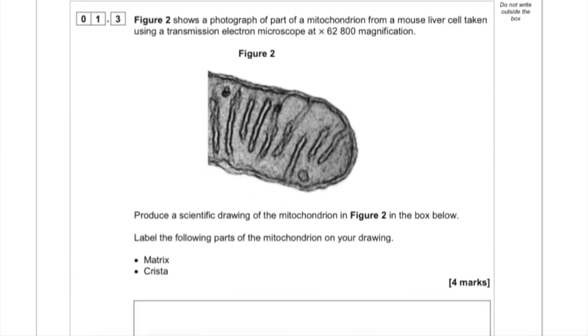So finally, the last part of question one, we've got another figure showing a photograph of part of a mitochondrion from a mouse liver cell taken using a transmission electron microscope at this really high magnification. And you've been asked to produce a scientific drawing of the mitochondrion in the box below. And you need to label this drawing. This is four marks. And this is testing your practical drawing skills, which you should have acquired throughout the year. And only 2.4% of students gained all four marks here.